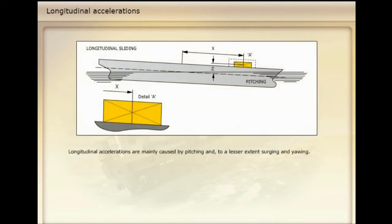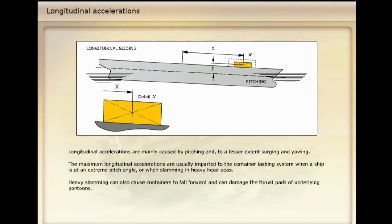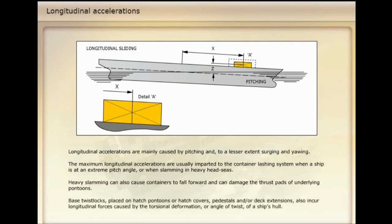Longitudinal accelerations are mainly caused by pitching and to a lesser extent surging and yawing. The maximum longitudinal accelerations are usually imparted to the container lashing system when a ship is at an extreme pitch angle or when slamming in heavy head seas. Heavy slamming can also cause containers to fall forward and can damage the thrust pads of underlying pontoons. Base twist locks placed on hatch pontoons or hatch covers, pedestals and/or deck extensions also incur longitudinal forces caused by the torsional deformation or angle of twist of a ship's hull.